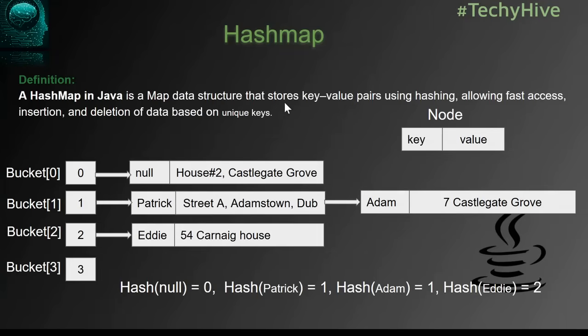The HashMap in Java is a map data structure that stores key-value pairs using hashing, allowing fast access, insertion, and deletion of data based on a unique key. Basically, at a high level, a HashMap is one of the data structures you may have learned in an engineering course to store key-value pairs. Here is a simple example of a HashMap containing four entries, and each entry contains at least a key and a value.